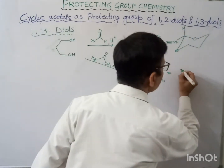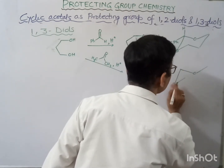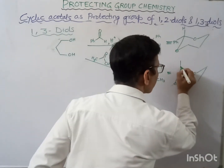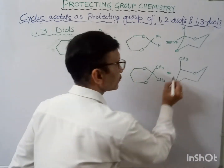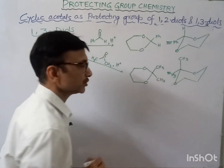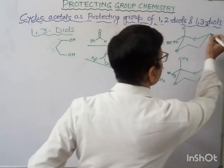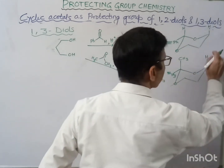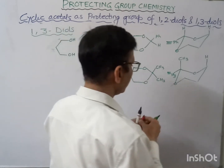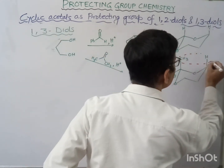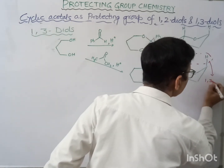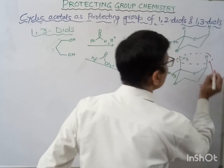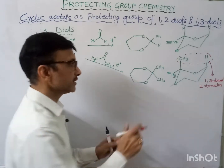Whereas if we write the acetone product in chair form, these two methyl groups are present such that one methyl is at the axial position and another methyl is at the equatorial position. The hydrogen is also present at the axial position, so there is a 1,3-diaxial interaction present. No such 1,3-diaxial interaction is present in the benzaldehyde case.